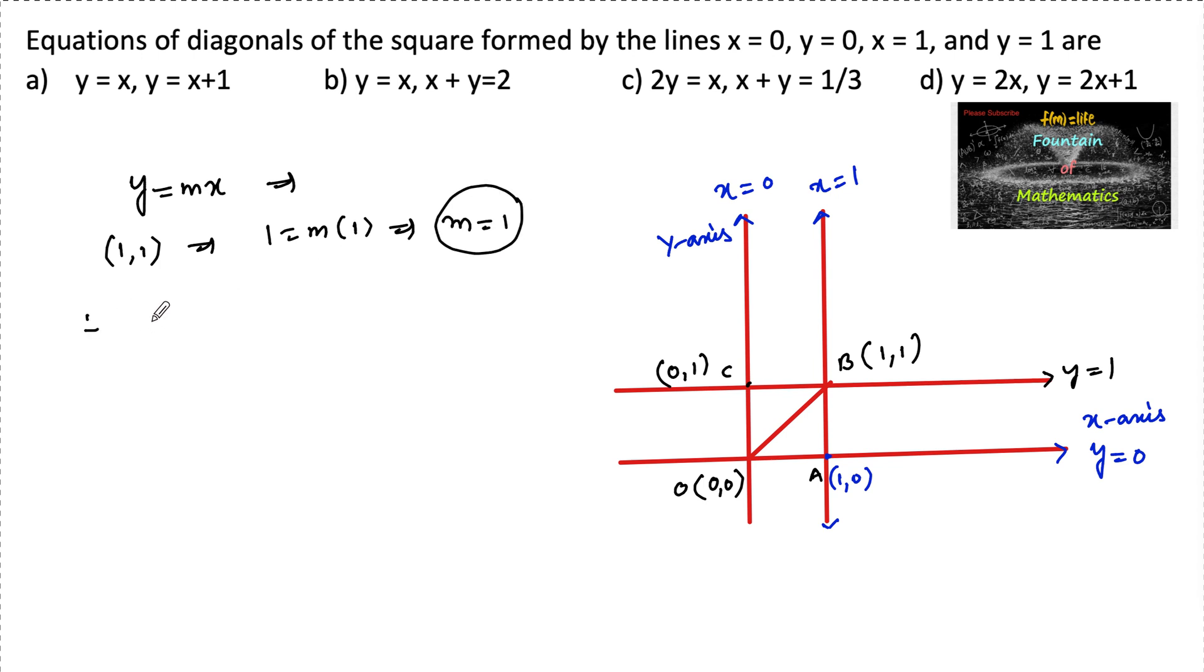Therefore, equation of diagonal OB is given by y is equal to 1 into x, that is y is equal to x.